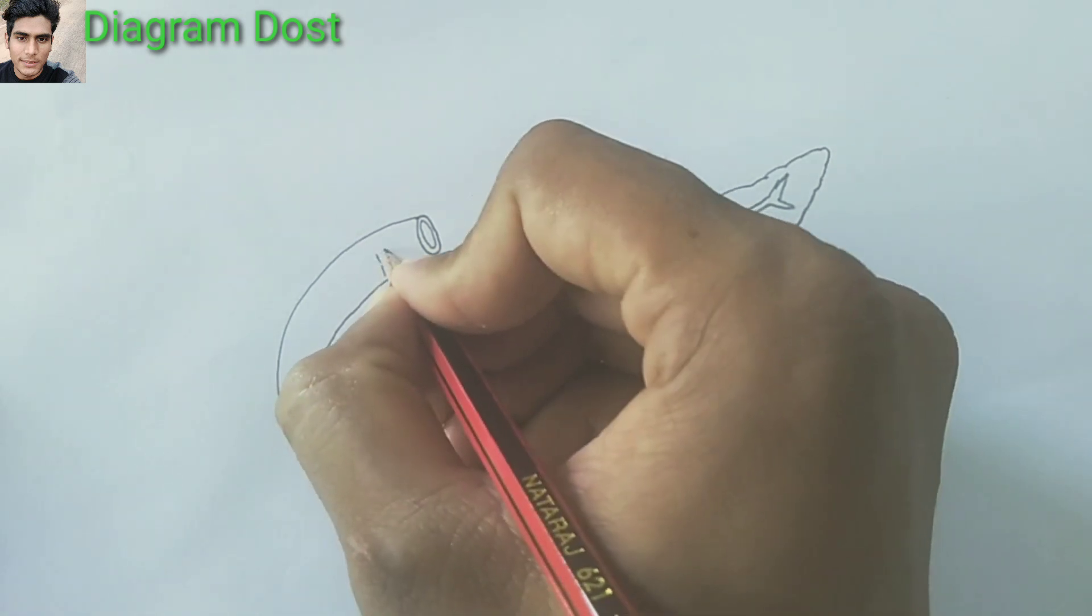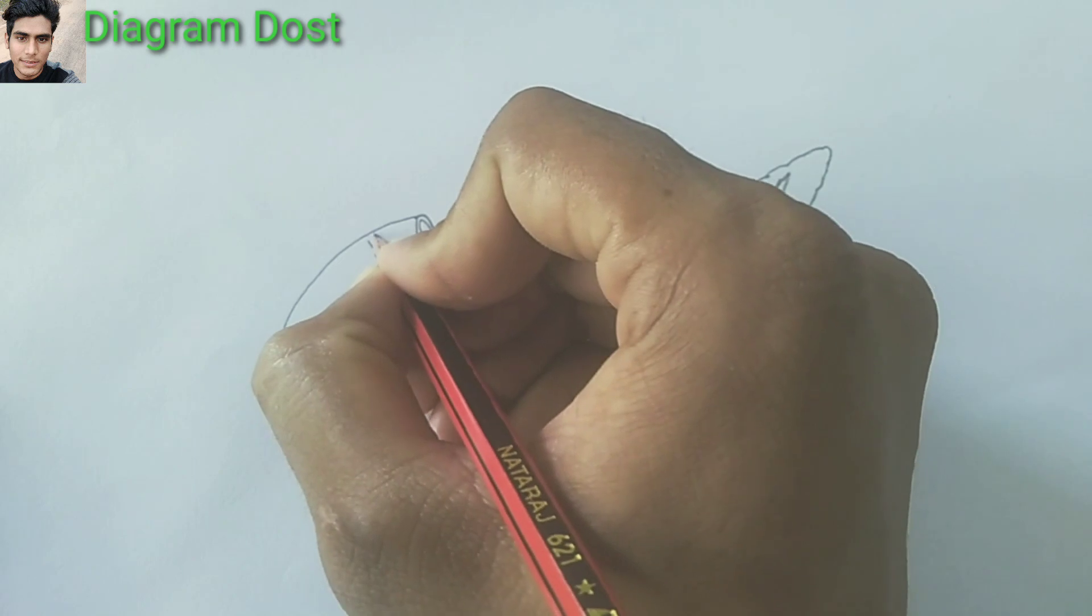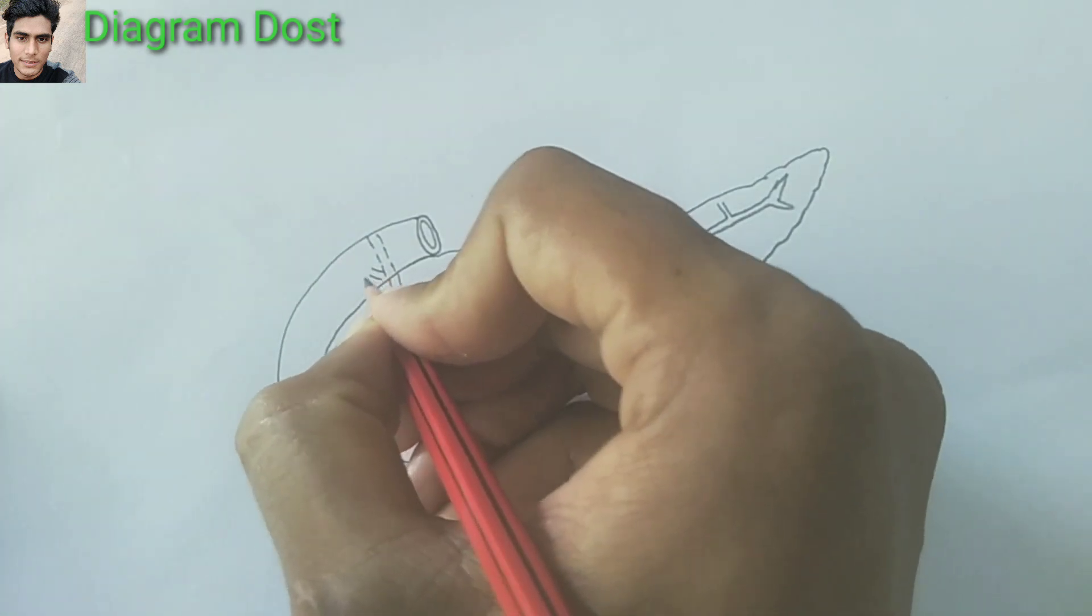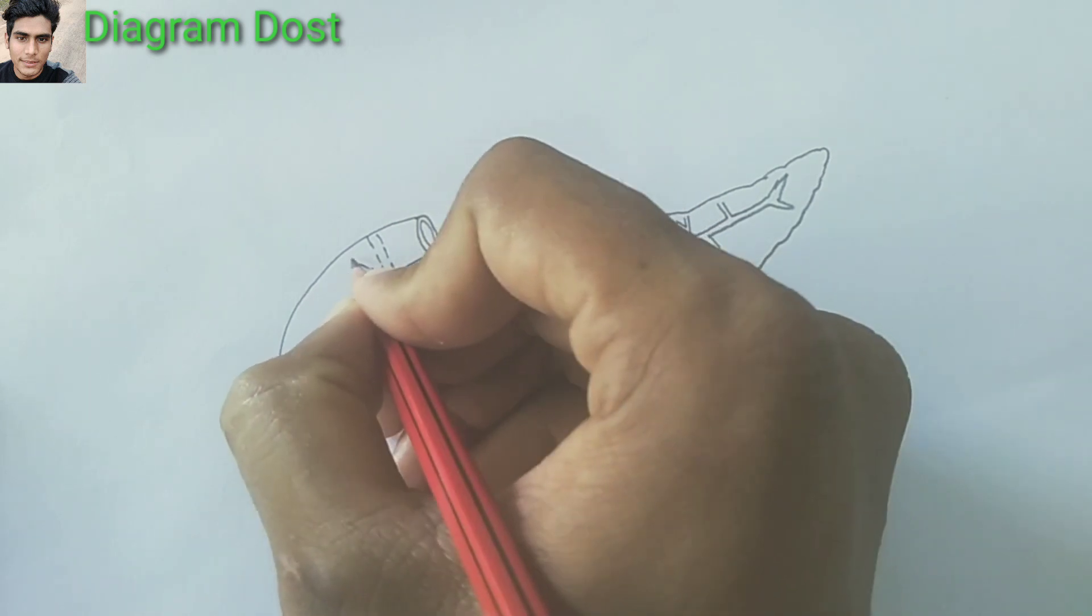Now I am making a dotted duct. This shows that this duct passes behind the duodenum.